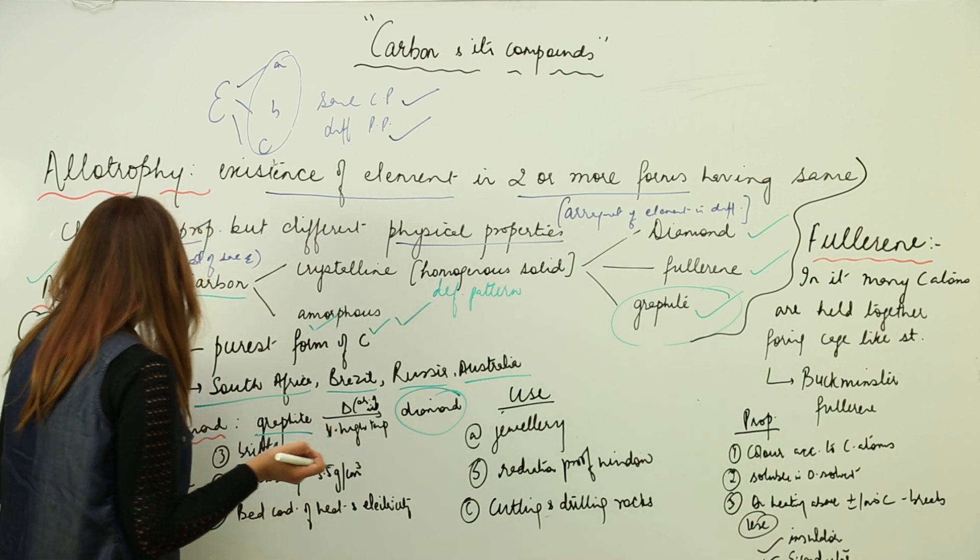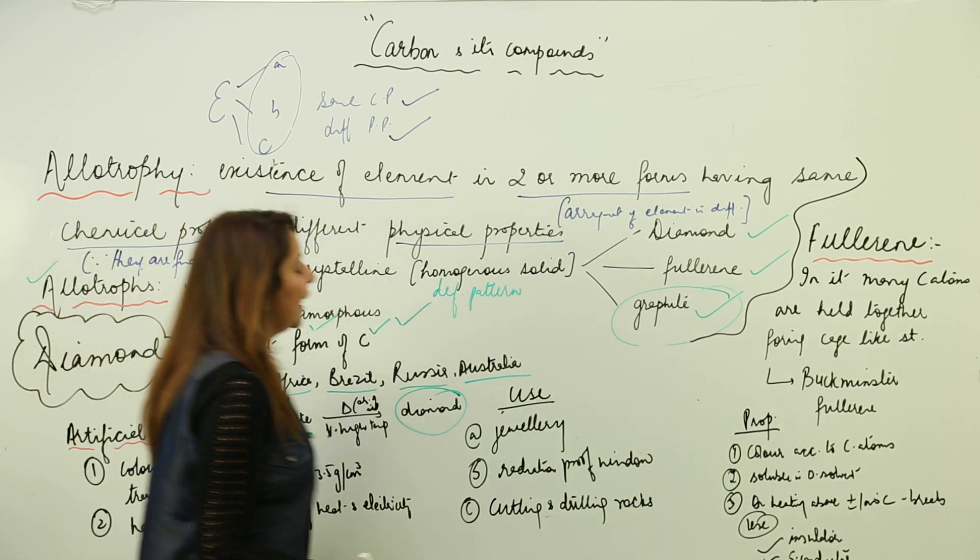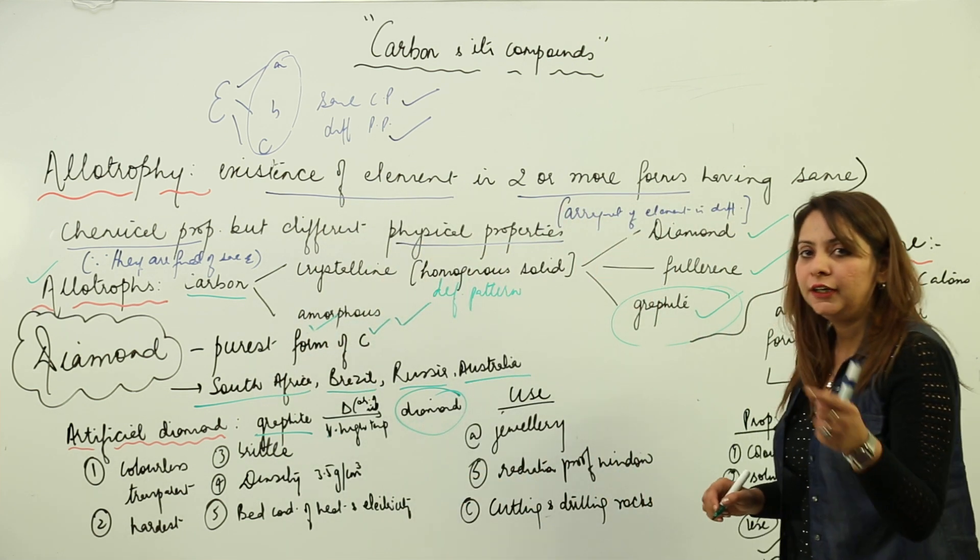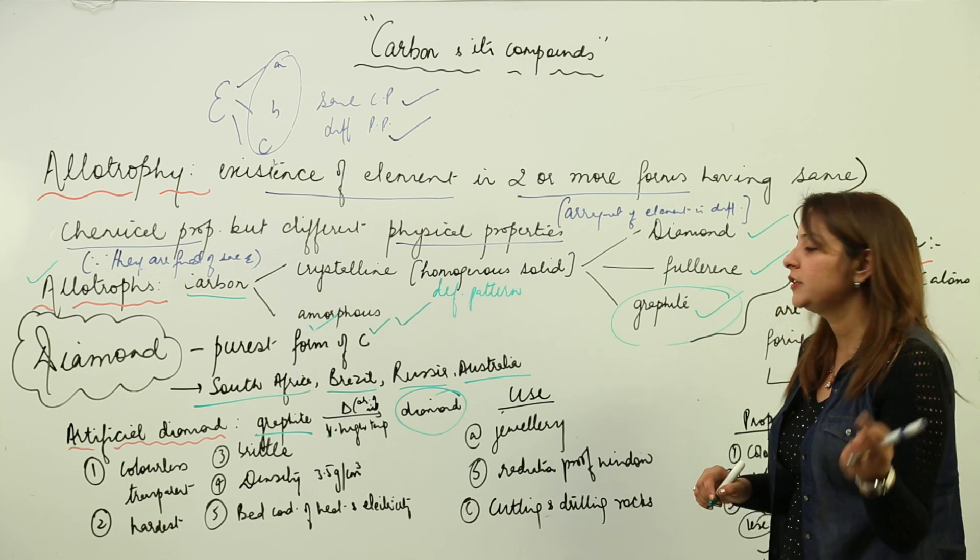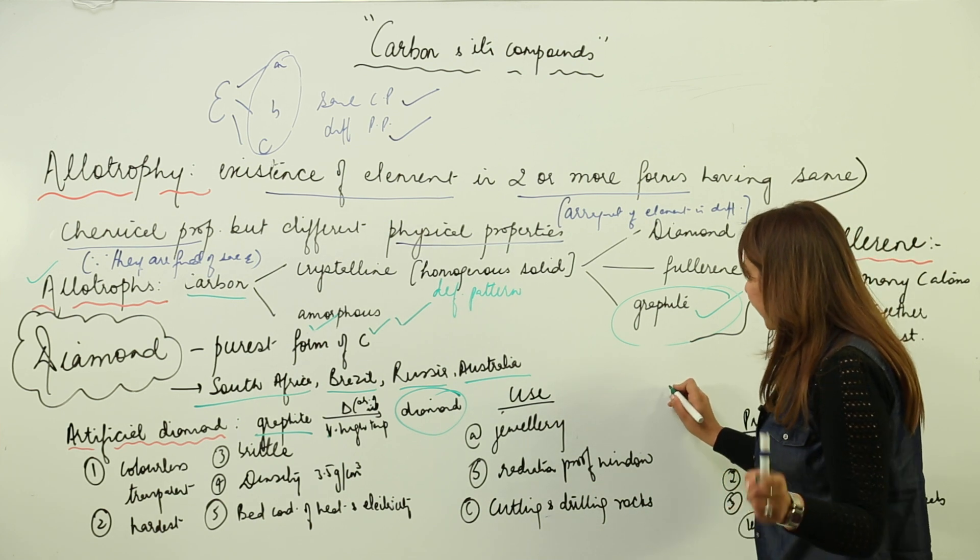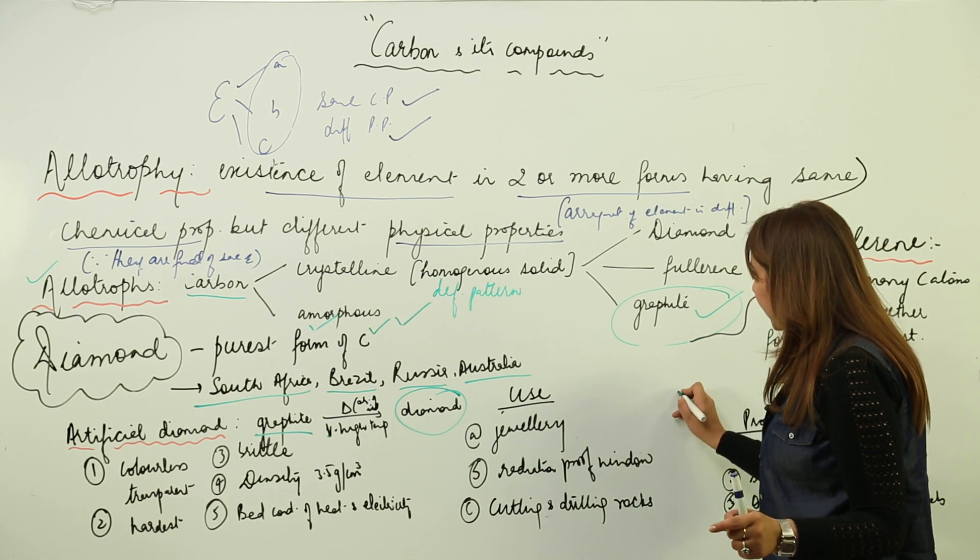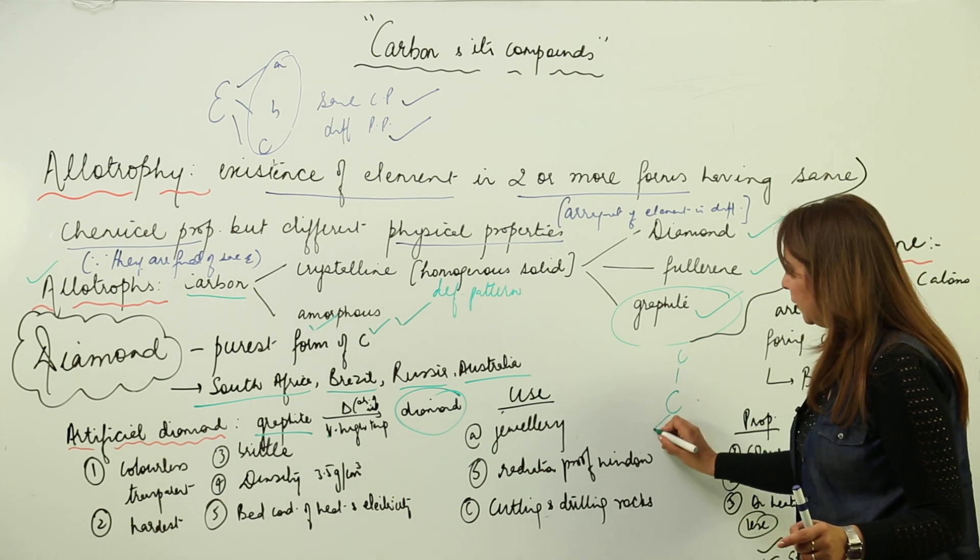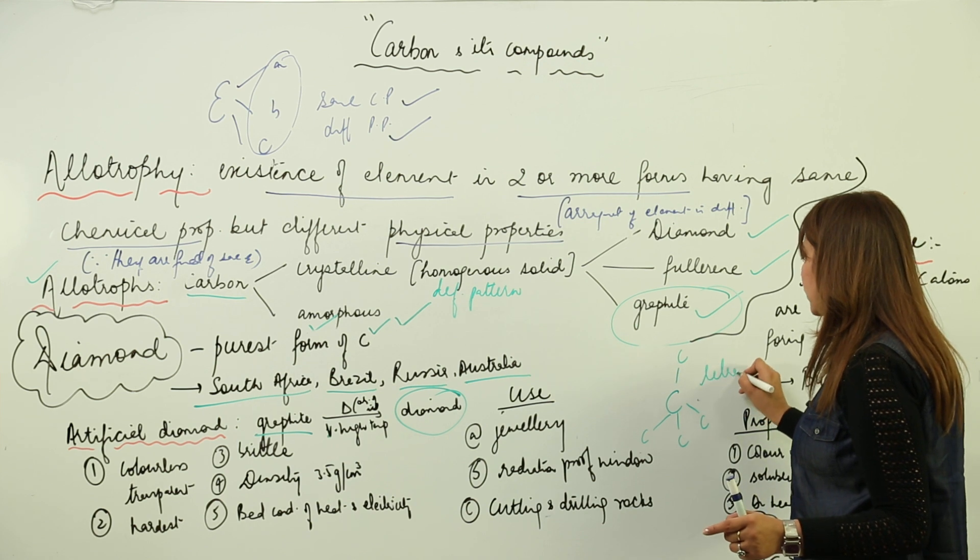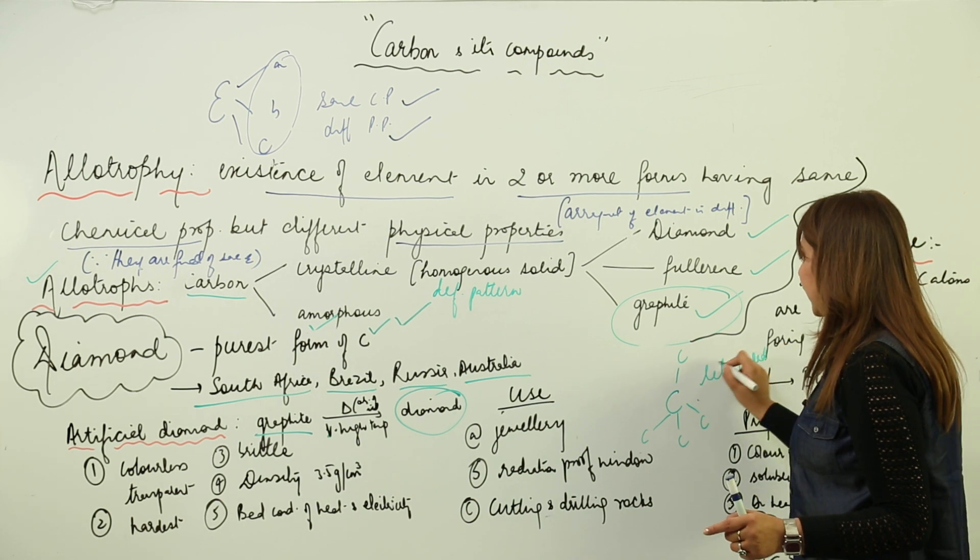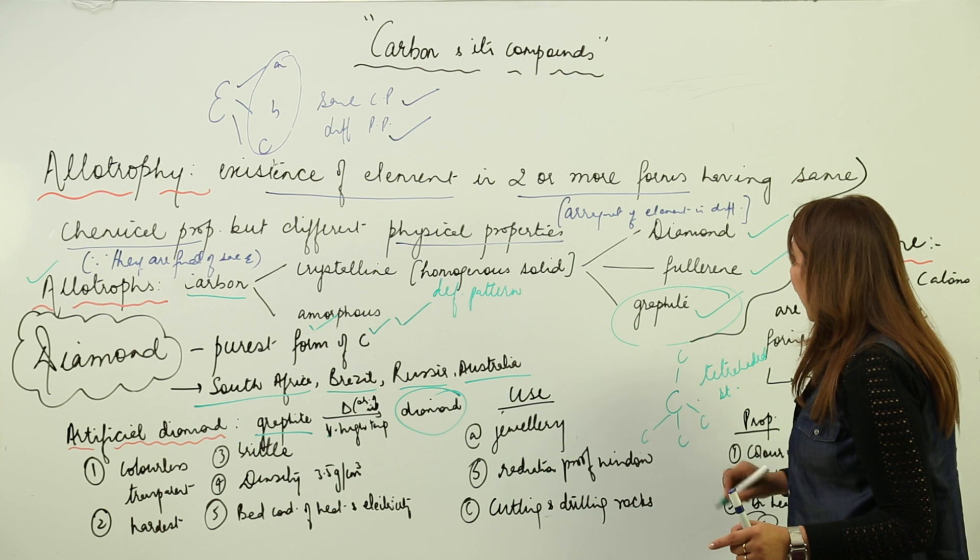What is the basic structure of diamond? Diamond and graphite both have different structures. In diamond, each carbon atom is linked to four other carbon atoms like this, giving rise to a tetrahedral structure.